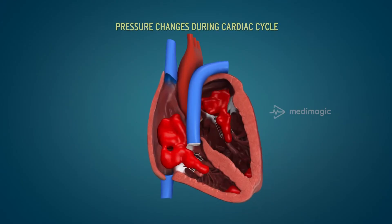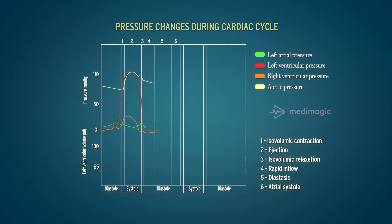The pressure changes in ventricles during each phase of a cardiac cycle is as follows. During diastasis or before the atrial systole begins, the pressure in the ventricles is slightly above zero. During atrial systole, as the blood starts pooling into the ventricles, the intraventricular pressure slightly increases — about 7-8 mmHg in the left ventricle and about 6-7 mmHg in the right ventricle.